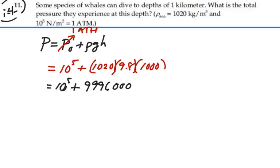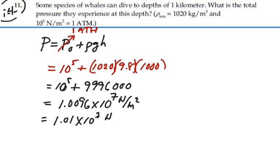Newtons per meter squared. If I add that, I get an answer of 1.01 times 10 to the 7 newtons per meter squared.